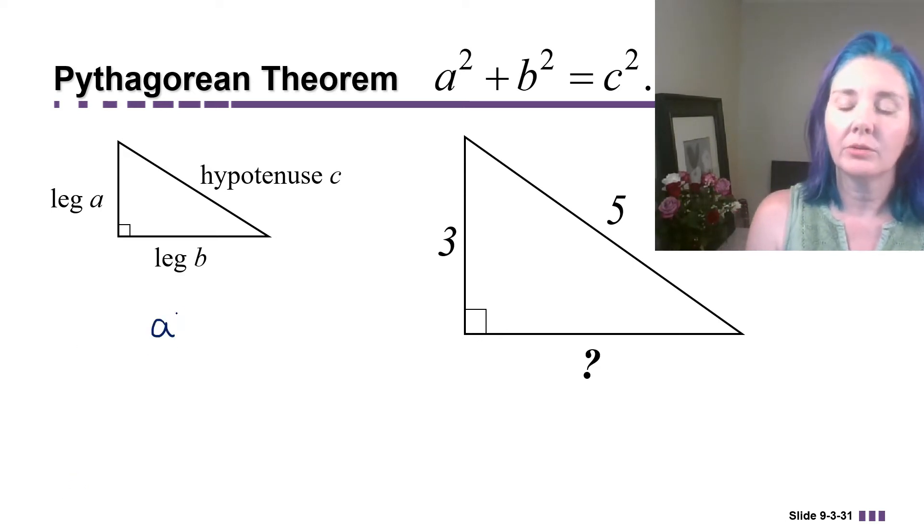Write down a squared plus b squared equals c squared, and you're going to replace either a or b, it doesn't really matter which one, with the length of the leg that you know. So 3 squared, I replaced a with 3 squared. I don't know the other leg, so I'm just going to leave b in there. But I do know that the hypotenuse is 5, so I'm going to replace c with 5.